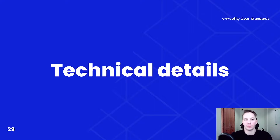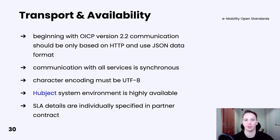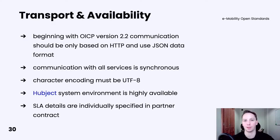In this module, let's cover some basic technical details characteristic for OICP. Beginning with OICP version 2.2, every communication must be based on HTTP protocol and use JSON data format in messages. In the past, it was also possible to use SOAP protocol, but now it's deprecated and cannot be used anymore.